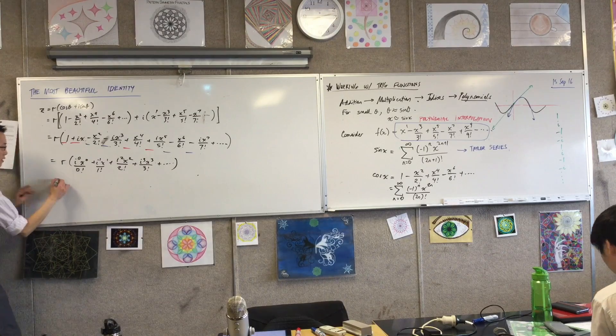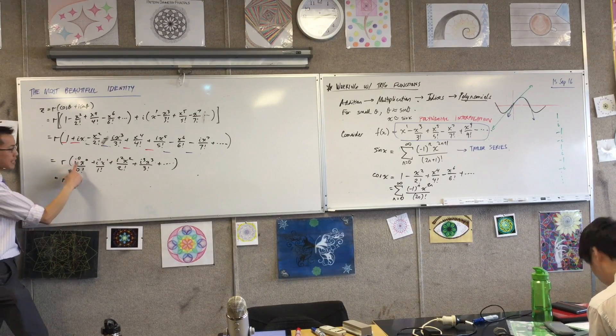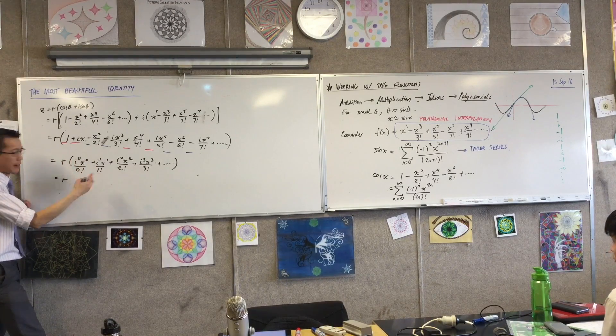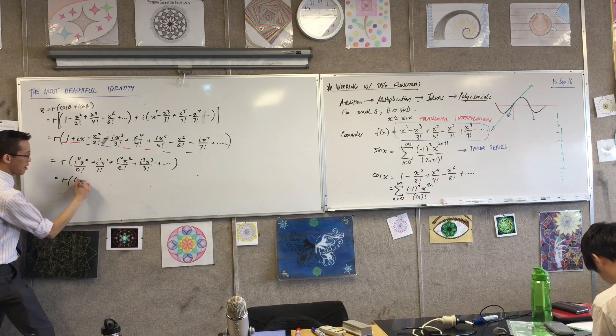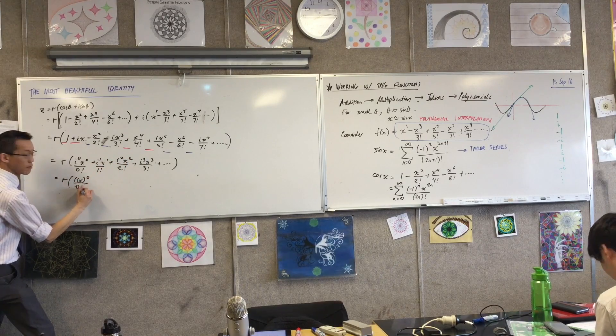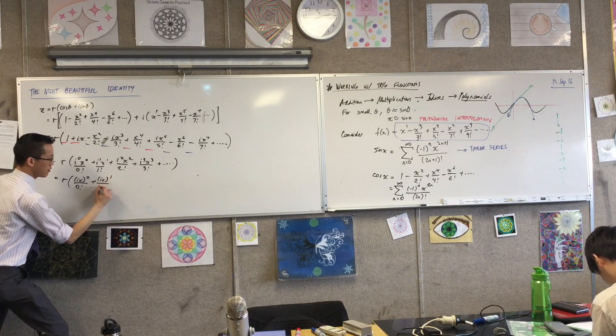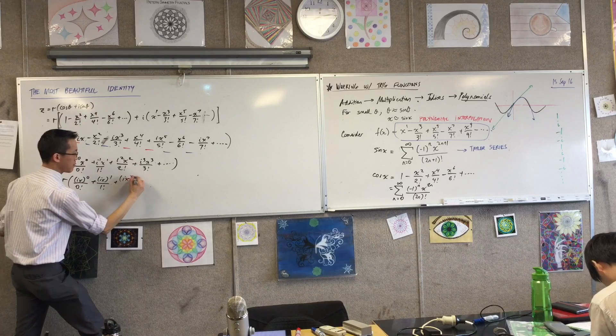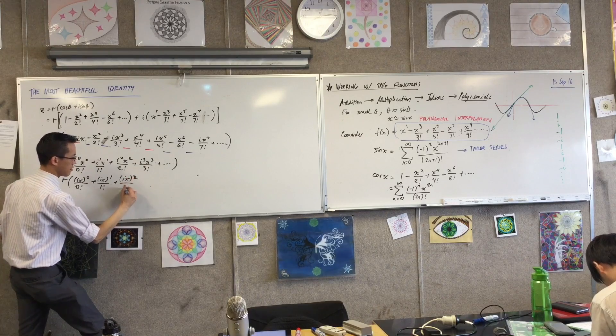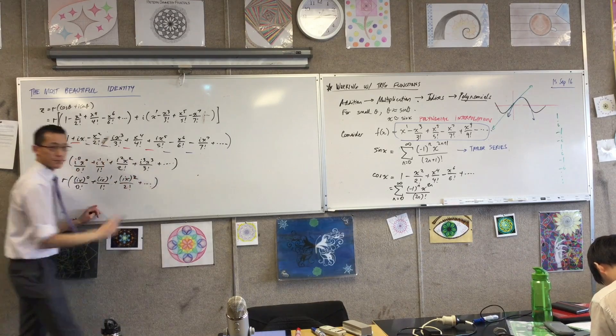I can write this a little better. Because both terms on the top in the product are having the same power. Therefore, I can write these as ix to the power of 0, and ix to the power of 1, and ix to the power of 2 on 2 factorial. You get the idea.